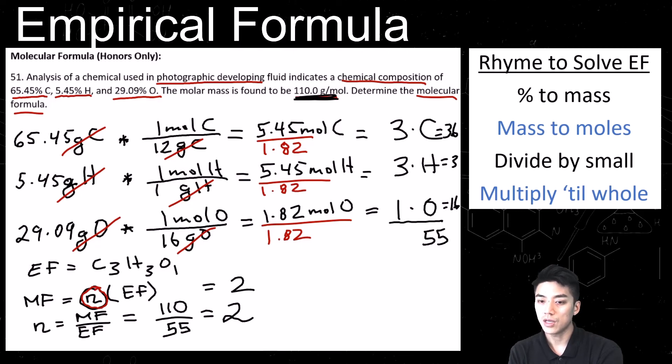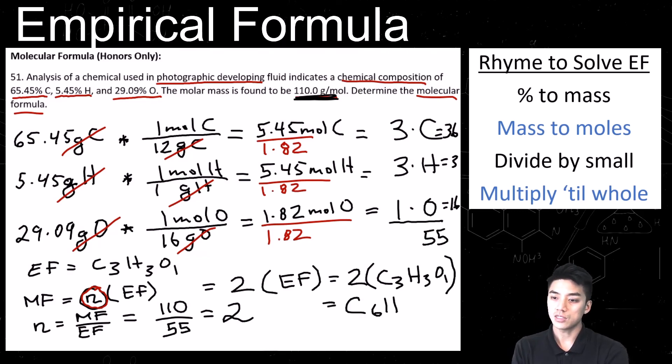So we have now found N, N is 2, and we're going to multiply this by the empirical formula. So 2 times C3H3O1. It's the distributive property of math. So that 2 distributes to everything, every single one of the subscripts. And we get a molecular mass of C6H6O2.